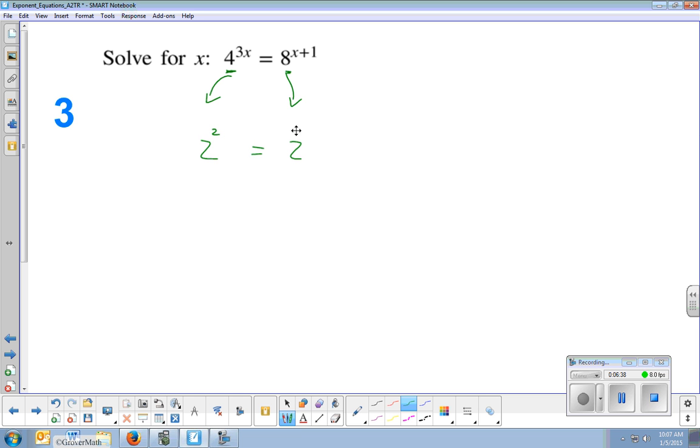4 is 2 squared. 8 is 2 cubed. And so the more complicated problems here, you have to change one into the other. A lot of people make the mistake of thinking 4 squared is 8. It's not. Because 4 squared is 16. So this is a case where you have to change both. So 4 I'm writing as 2 squared times the original exponent, 3x. And 8 I'm writing as 2 cubed times the original exponent, x plus 1.